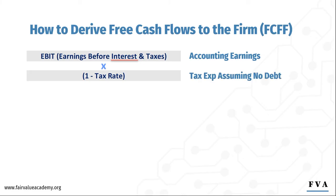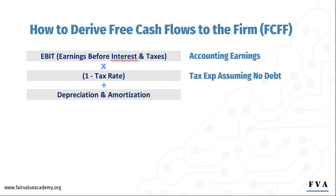Remember, we are converting accounting earnings into free cash flows. So next, we need to add back any non-cash items that the accountants may have processed, and this is usually depreciation and amortization. Depreciation and amortization are expenses that the accountants create and these expenses do not involve any cash flows, so we add them back because they are non-cash. Other non-cash items could include things like impairment charges, stock option expenses, or unrealized gains and losses.